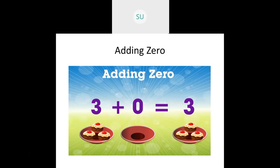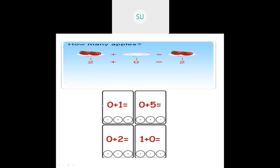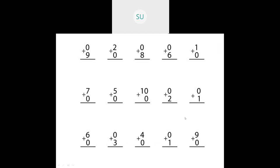So we saw 3 plus 0 — 3 plus 0 will be 3 only. Then 2 plus 0 which is also equal to 2. Then 0 plus 1 — 0 plus 1 will be 1 itself. Then 0 plus 5 will be 5 only. 0 plus 2 is 2, and 1 plus 0 is 1. So we saw many examples on addition by 0.